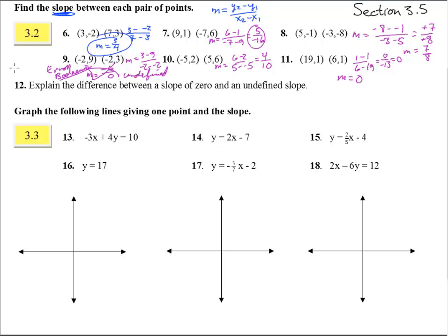Number 12, explain the difference between a slope of 0 and an undefined slope. It can best be seen by looking at number 11 and number 9. If we were to graph these guys, a little small graph here, negative 2 comma 9 would be up there, negative 2 comma 3 is like right here, so you can see that an undefined slope is vertical, going straight up and down.